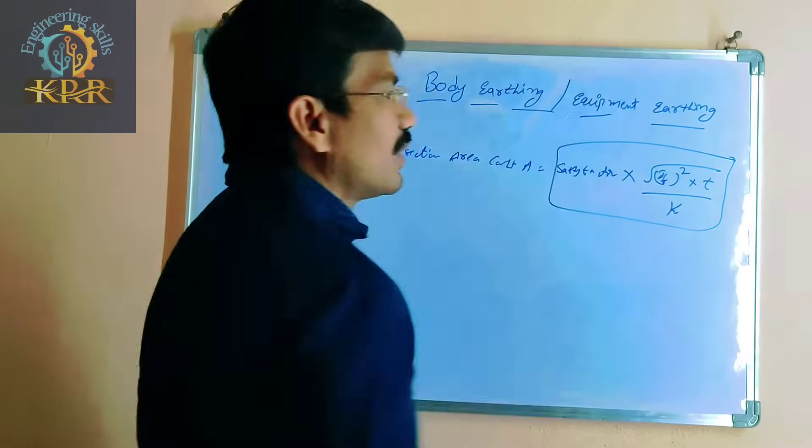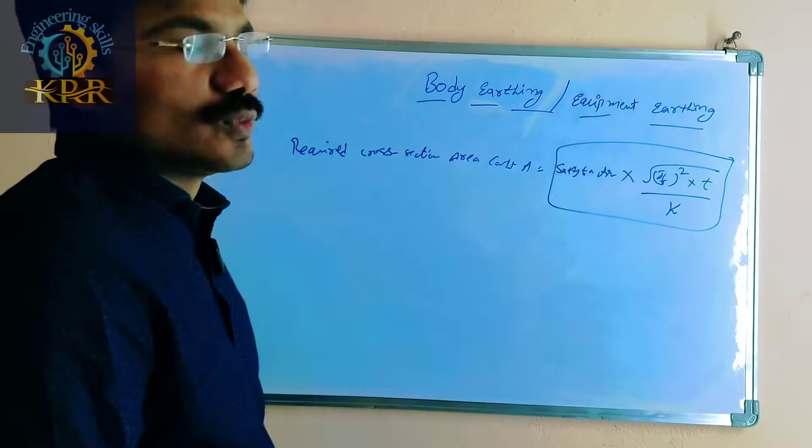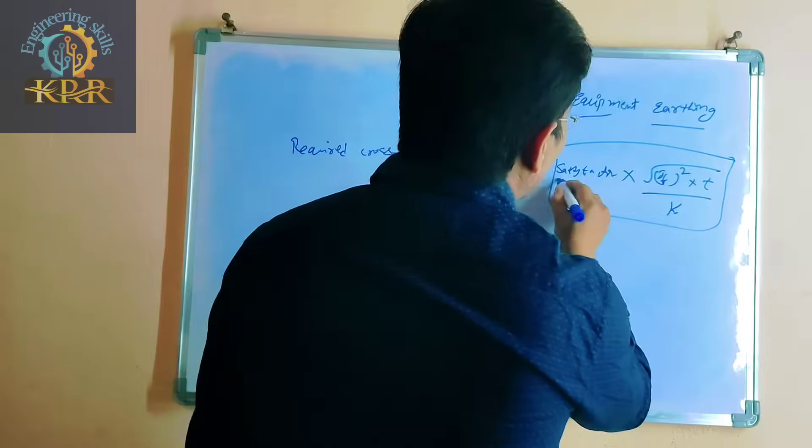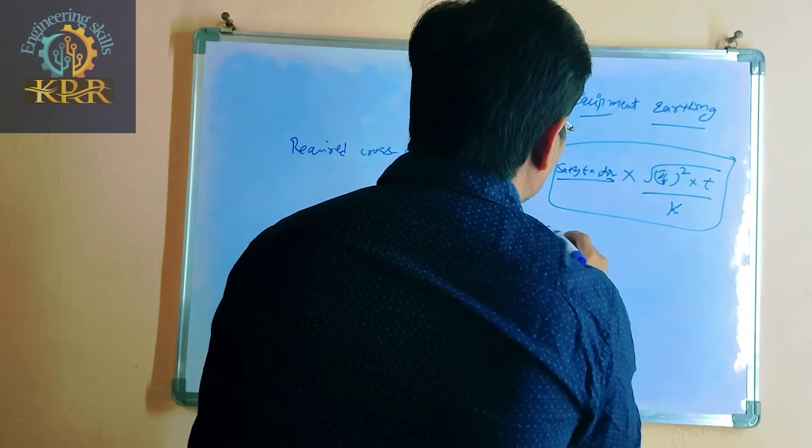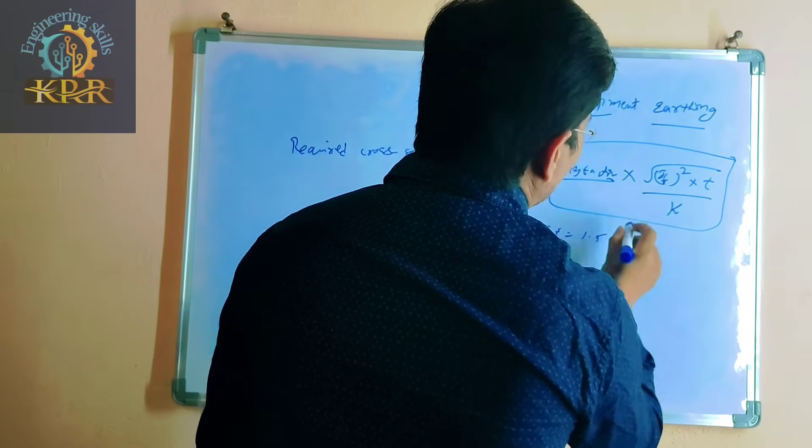Using this formula, you can calculate the required earth wire size. For example, the safety factor is 1.5.